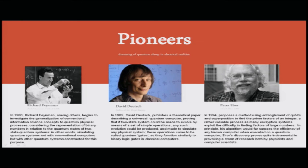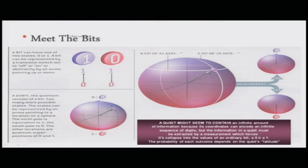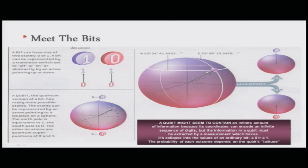We have looked at bits as data carriers. A bit can have one of two states: zero or one. A bit can be represented by a transistor switch set to off or on, or abstractly by an arrow pointing up or down.